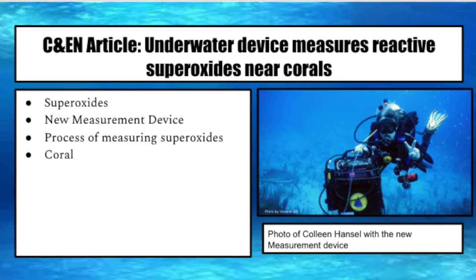The device uses a chemiluminescent probe — a luciferin analog from a marine organism — to detect superoxides. The team conducted many tests to calibrate the new device before sending it into the field for the first time, testing off the coast of Woods Hole, Massachusetts, and later in the coral reefs of Cuba. With this new device, they learned that different corals emit different amounts of superoxides, meaning they are regulating the production of superoxides and the production is species-specific. The article ends saying understanding superoxide chemistry may ultimately improve management strategies for corals, which are severely threatened by climate change and disease.